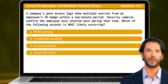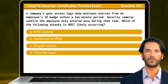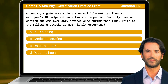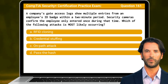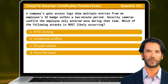Question 161. A company's gate access logs show multiple entries from an employee's ID badge within a two-minute period. Security cameras confirm the employee only entered once during that time. Which of the following attacks is most likely occurring?